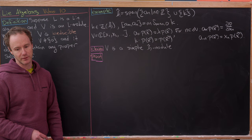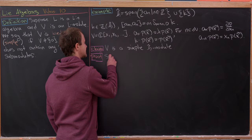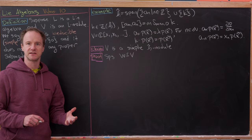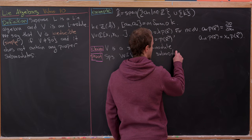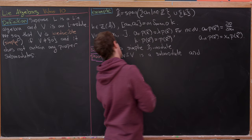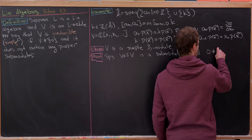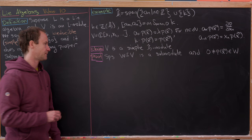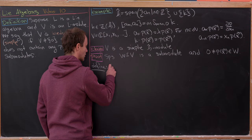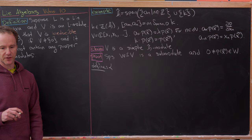Now we'd like to show this is a simple h-hat module. Suppose W is a non-trivial submodule — we want to show that W equals all of V. Take a non-zero polynomial p(x) inside W. We introduce a total ordering, written with a precursor symbol, on the monomials of V.